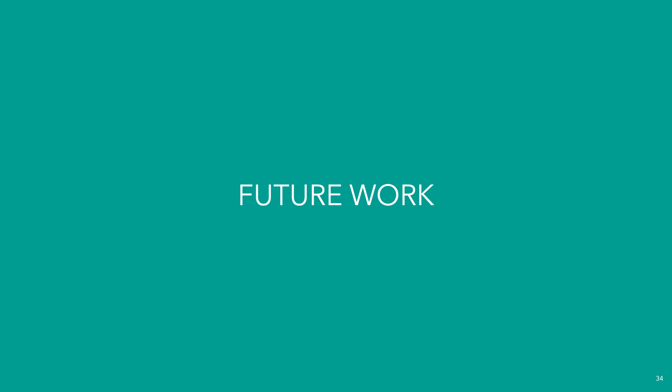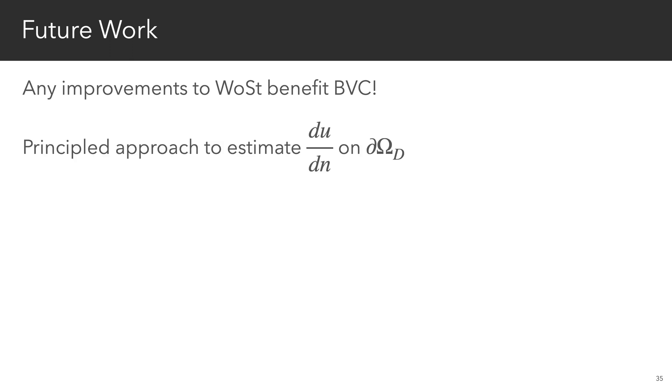Now, there are a number of ways in which our method can be improved. For instance, we'll benefit directly from any improvements to the walk-on-stars algorithm because we rely heavily on it as a subroutine. Our results should have lower error with a more principled approach for estimating normal derivatives on the Dirichlet boundary.